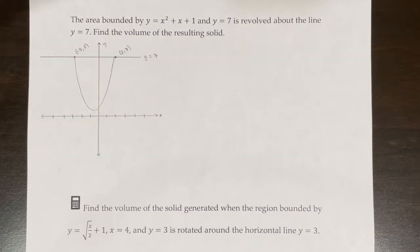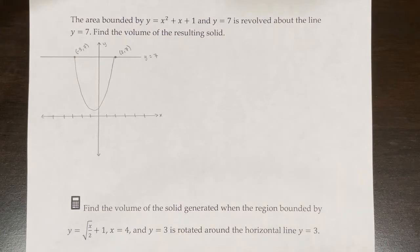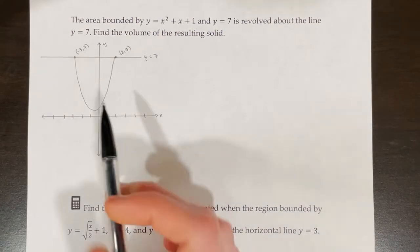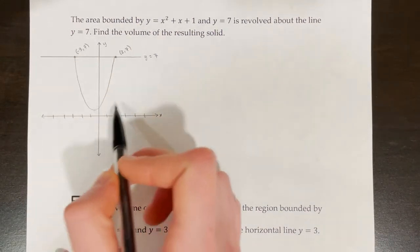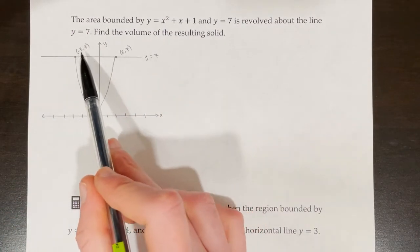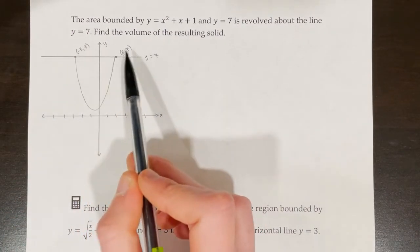The area bounded by y equals x squared plus x plus 1 and y equals 7 is revolved about the line y equals 7. Find the volume of the resulting solid. The first step is to sketch out the equations so you can see the region you're going to be rotating. Here is the parabola, and there is the line y equals 7, and those lines are intersecting at negative 3, 7 and 2, 7.